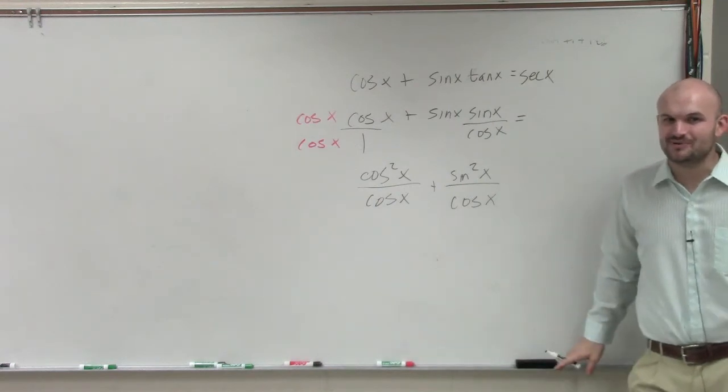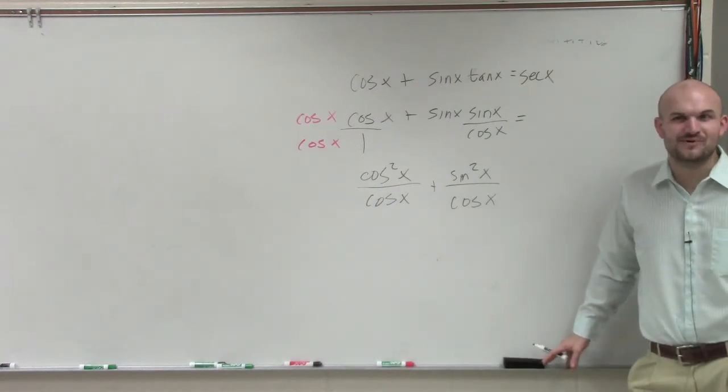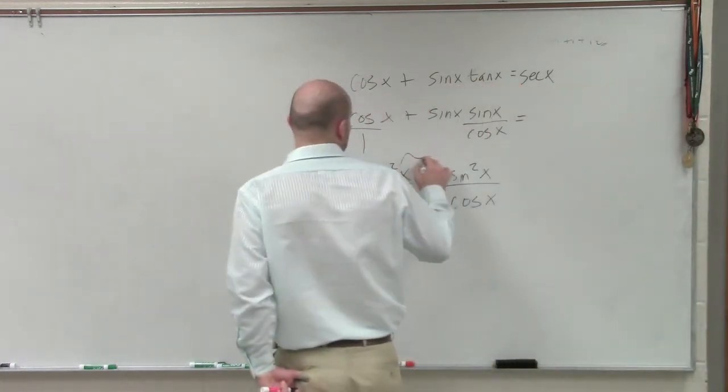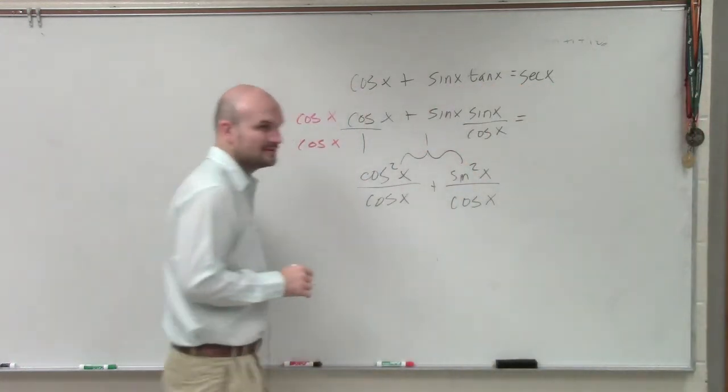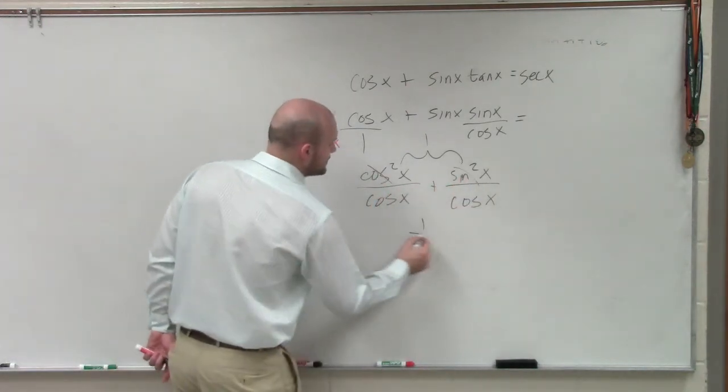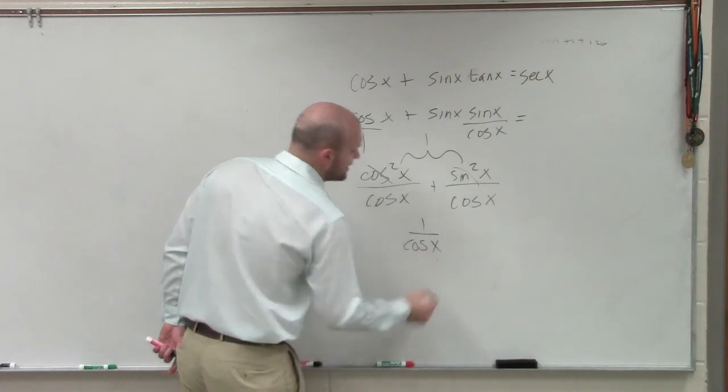Sine squared plus cosine squared equals a value. Sine squared plus cosine squared equals 1. So therefore, now we're just left with 1 over cosine of x.